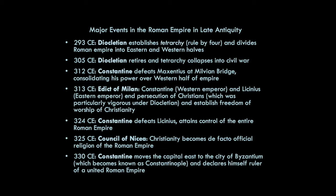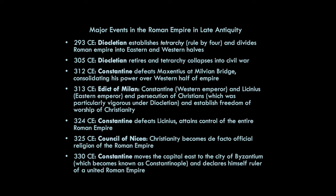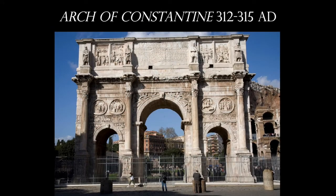Some of the major events in the Roman Empire and Late Antiquity: in 293, Diocletian establishes the Tetrarchy — the rule by four — and divides the Roman Empire into eastern and western halves. About a decade later, Diocletian retires, the Tetrarchy collapses into civil war, and that's where we have artworks being created of the four rulers. When we move on to Constantine, in 312 he defeats Maxentius at the Battle of the Milvian Bridge, consolidating his power over the western half of the empire, and that's where we get Constantine's arch.